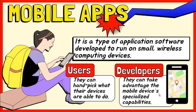For example, a gaming app might take advantage of the phone's accelerometer. Another example is an app that uses a location-based feature.